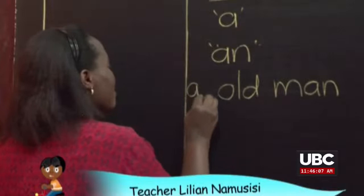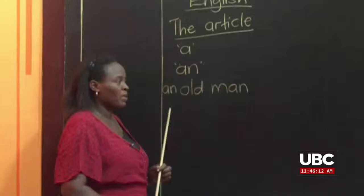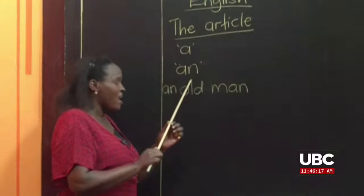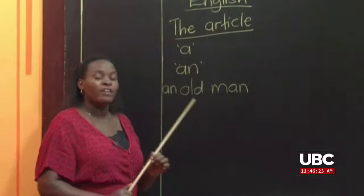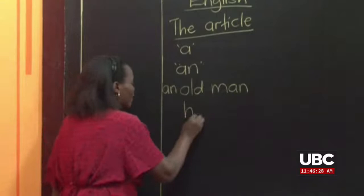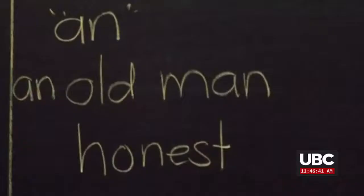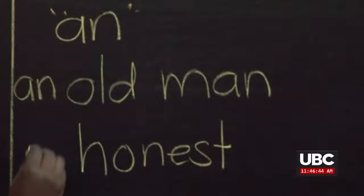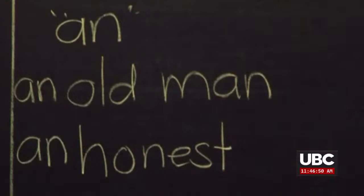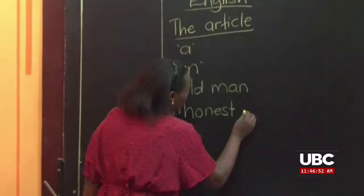When the adjective begins with a vowel letter, we use the article 'an'. So we say 'an old man' because it begins with the vowel letter O. Also, when the adjective begins with a consonant but has the sound of a vowel letter — for example, the word 'honest' — you don't say 'honest', you say 'honest'. So this one also falls under the article 'an'. We say 'an honest woman'.